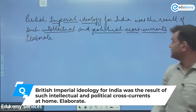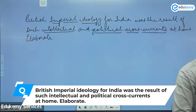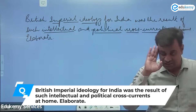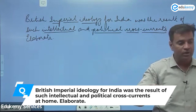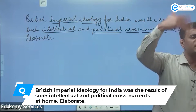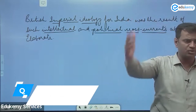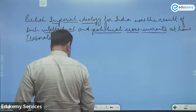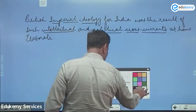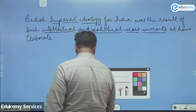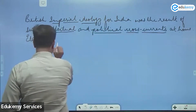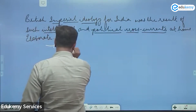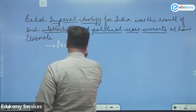Intellectual and political cross currents. Britain maintained its colonial empire with a clear-cut ideology — no confusion at all. The first major cross current to be understood is Orientalism.